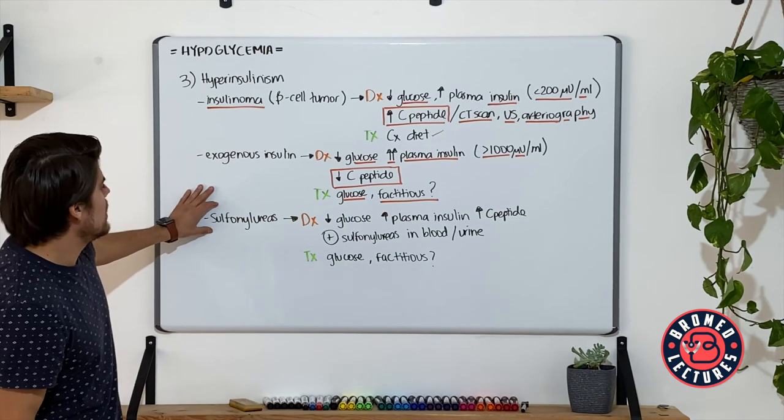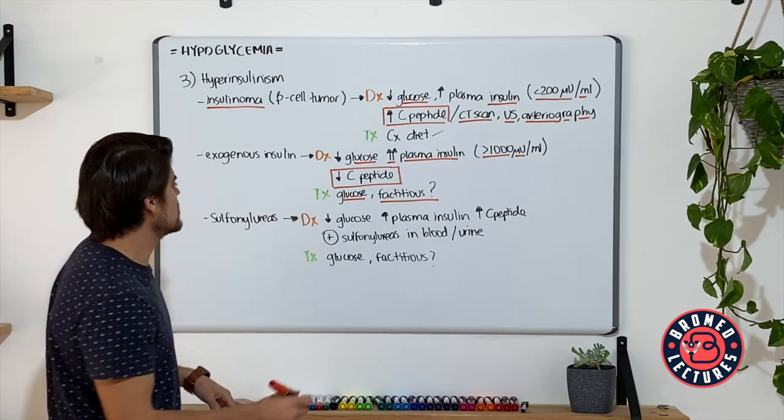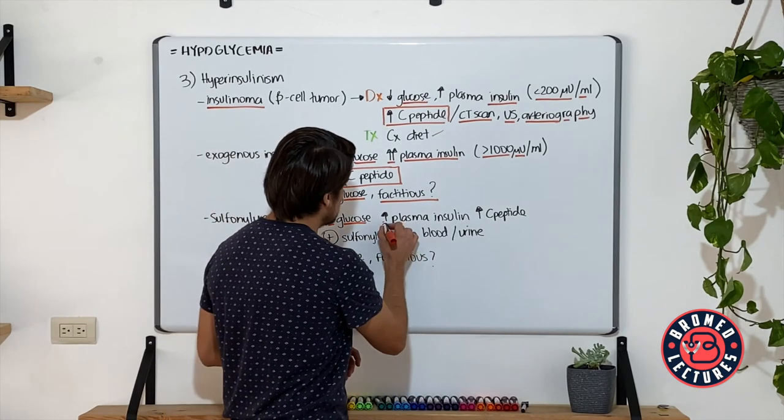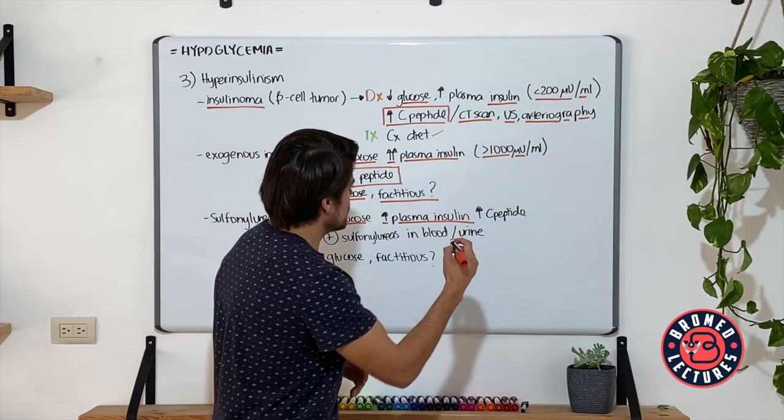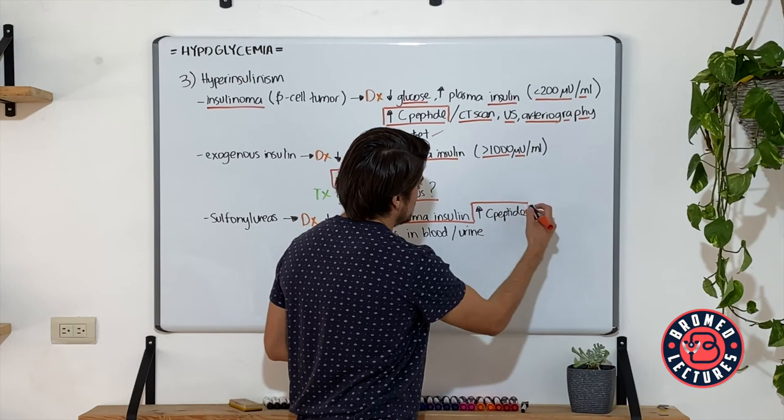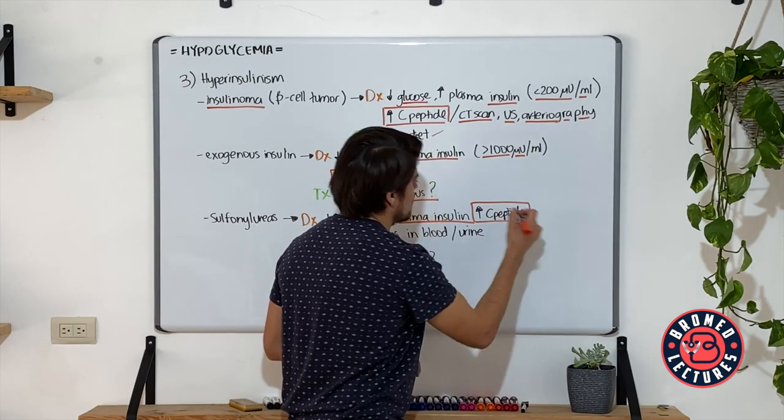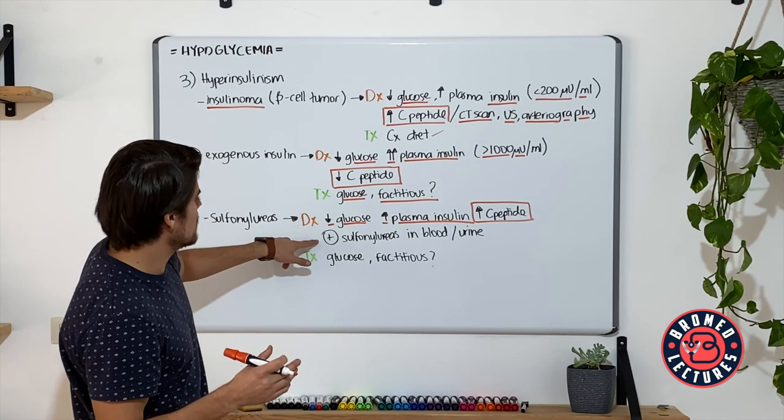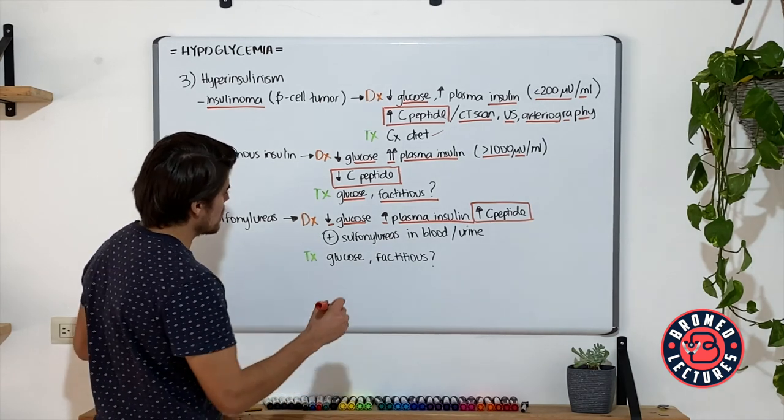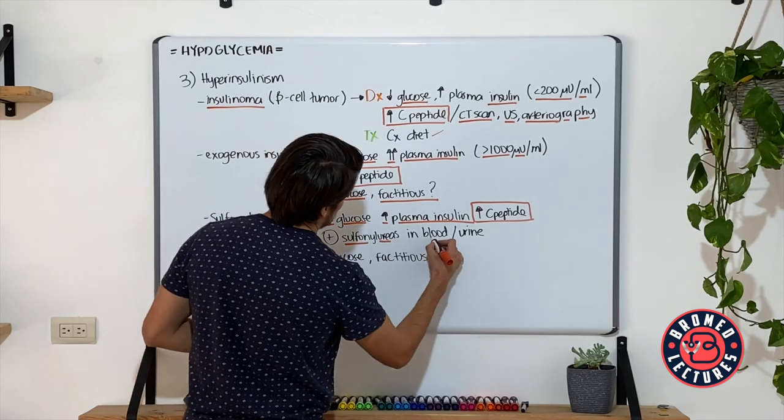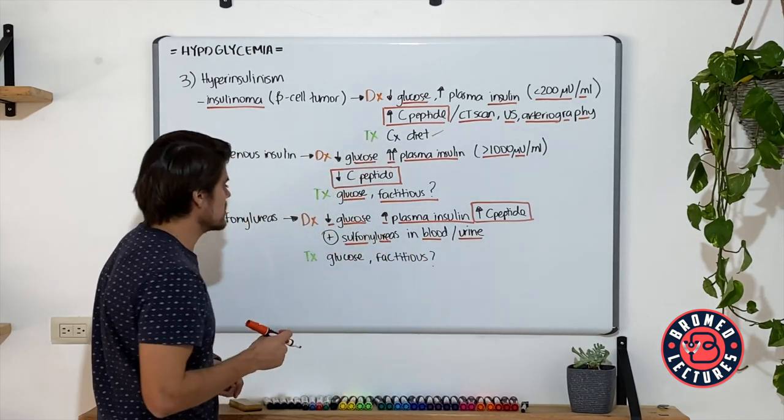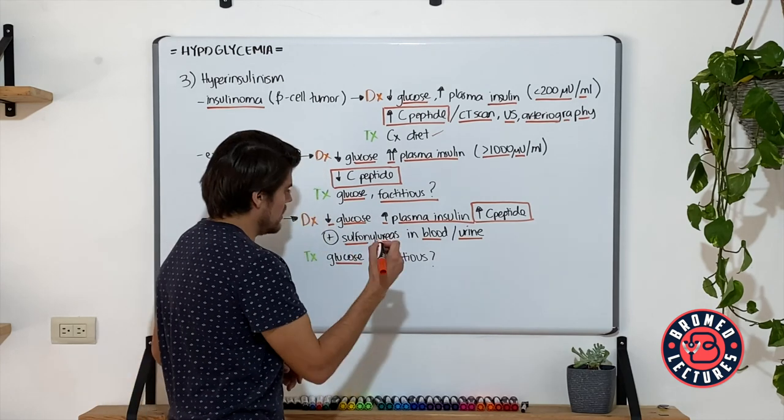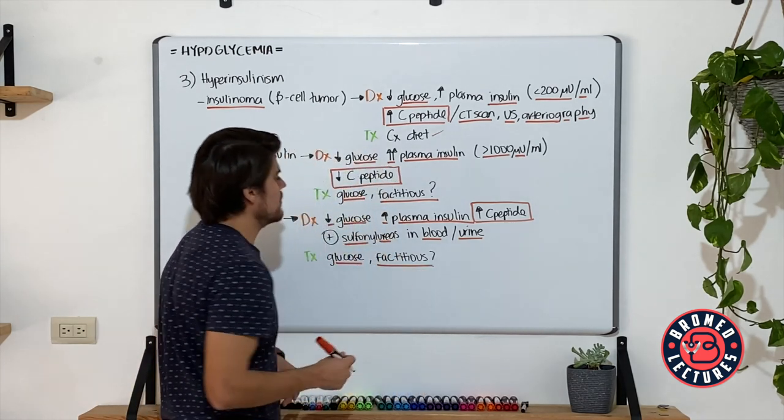And for sulfonylureas, the same, your diagnosis, you have a hypoglycemic patient that has an increased plasmatic insulin. But in this one, you're going to see that the C-peptide is increased because it is the pancreas that is secreting this insulin due to the sulfonylureas action. And of course, measure sulfonylureas either in blood or urine for your diagnosis. For the treatment, the same, replace glucose and address if this is a factitious disorder.